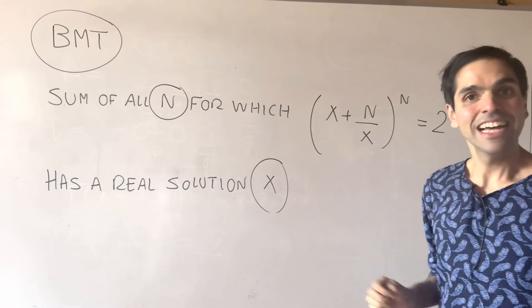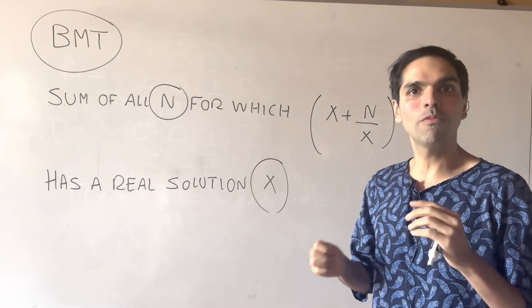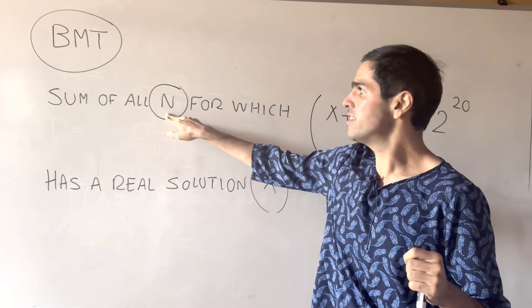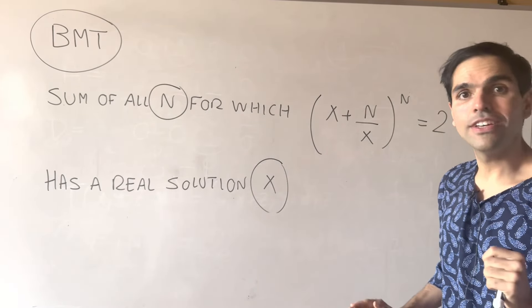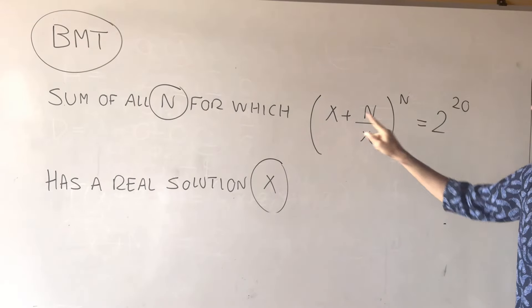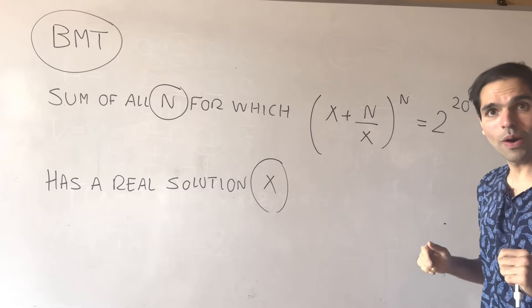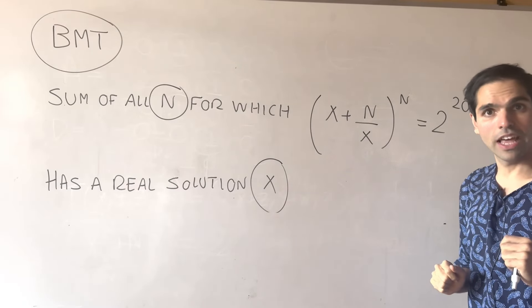All right, thanks for watching, and let's solve a very neat problem from the Berkeley Math Tournament. Namely, let's find the sum of all positive integers n for which this equation, (x+n)/x to the n equals 2 to the 20, has a real solution x.